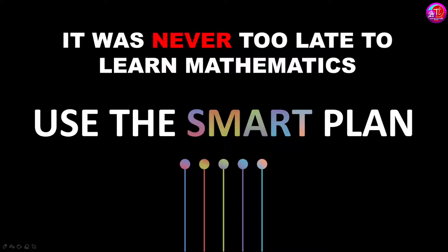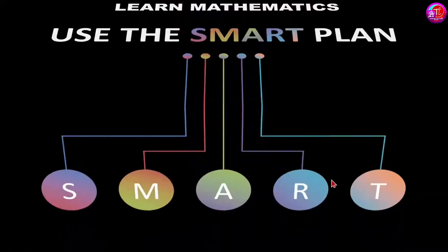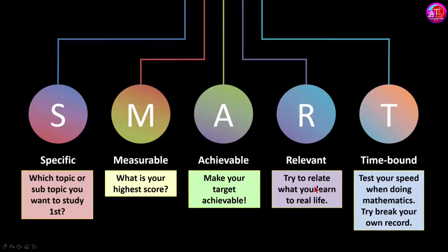It is never too late to learn mathematics and be a master in this subject. Just use the smart plan. In this smart plan, we have to be very specific about what we want to learn. Don't go into the topics or into the math subject without knowing what you want to learn. You must concentrate on which topic you want to major first, which subtopic you don't understand, and which one should be studied first before you can master the second subtopic. Be specific.